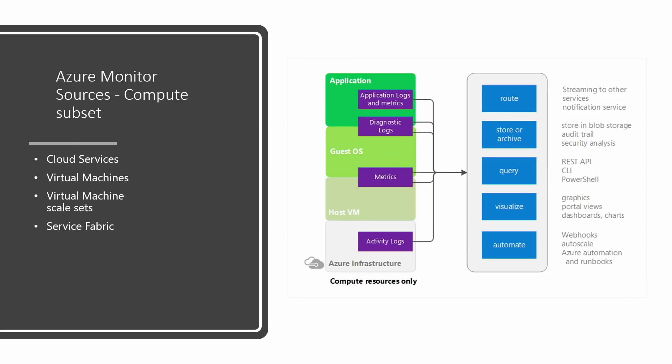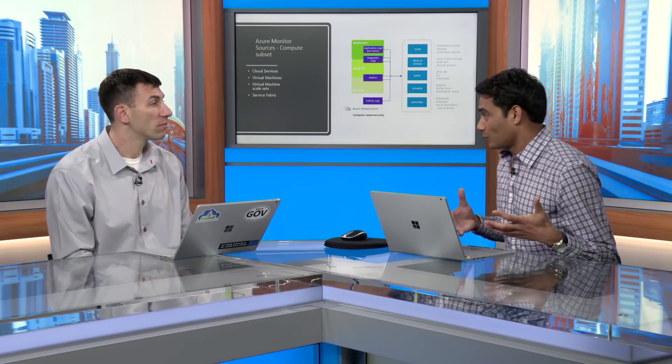The most important sources are the compute sources — that's where your websites and VMs are running production systems. Sources for monitoring data include application metrics from your applications and VMs, guest OS logs, and activity logs. Activity logs are Azure infrastructure monitors that track activities against resources. So if you delete or create a resource, or perform any activity against it, those are also part of the pipeline — not just runtime information, but even administrative activities like creating and deleting resources.